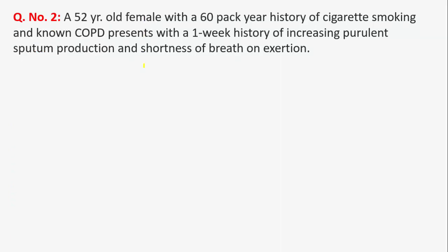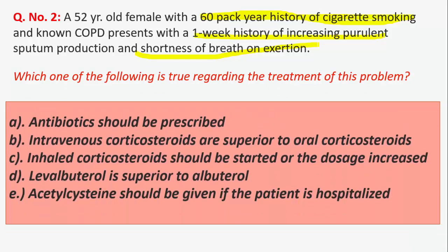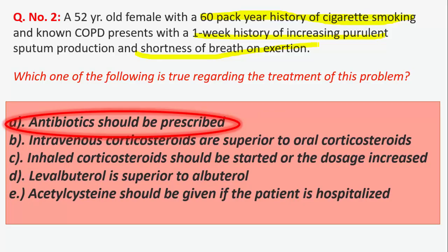Question 2: a 52-year-old female with a 60-pack-year history of cigarette smoking — the major risk factor in COPD — and known COPD presents with a one-week history of increased purulent sputum production and shortness of breath on exertion. Antibiotics should be prescribed because antibiotic use in moderately or severely ill patients with a COPD exacerbation reduces the risk of treatment failure or death and may also help patients with mild exacerbations.